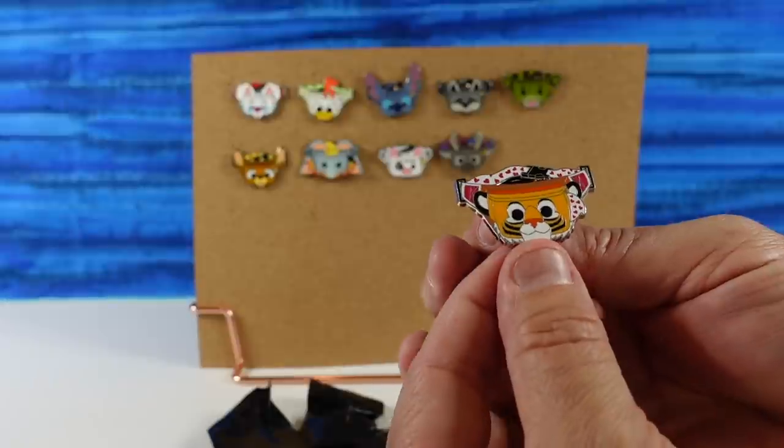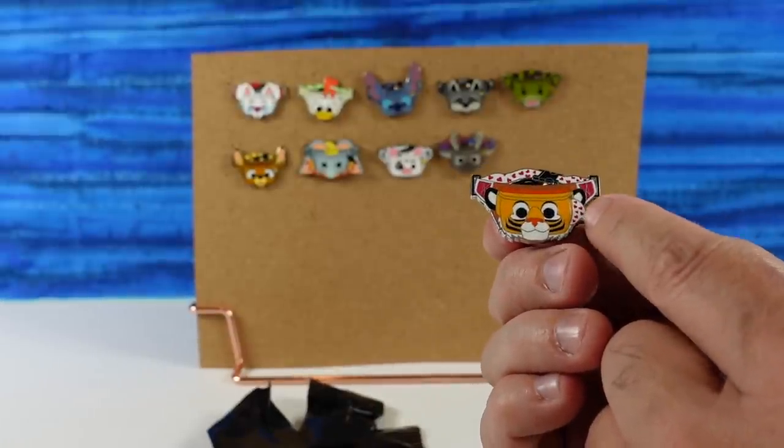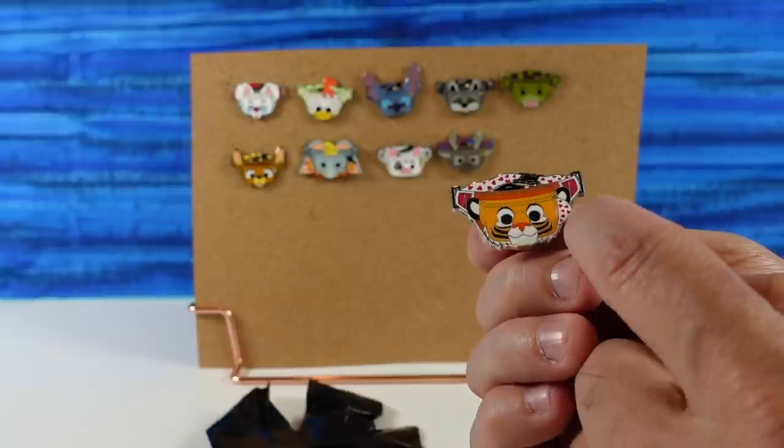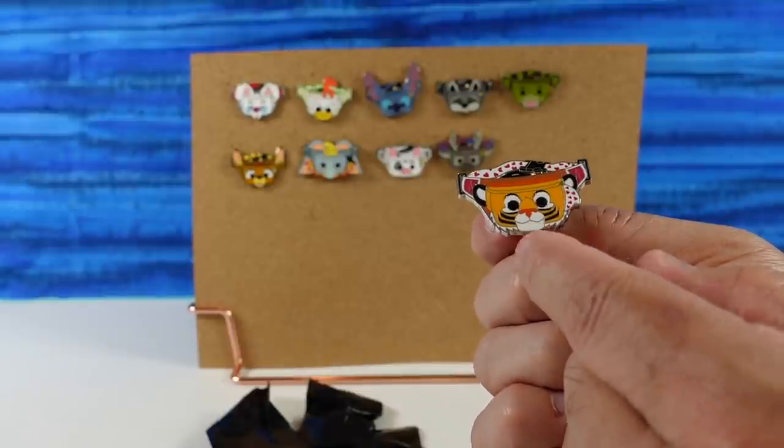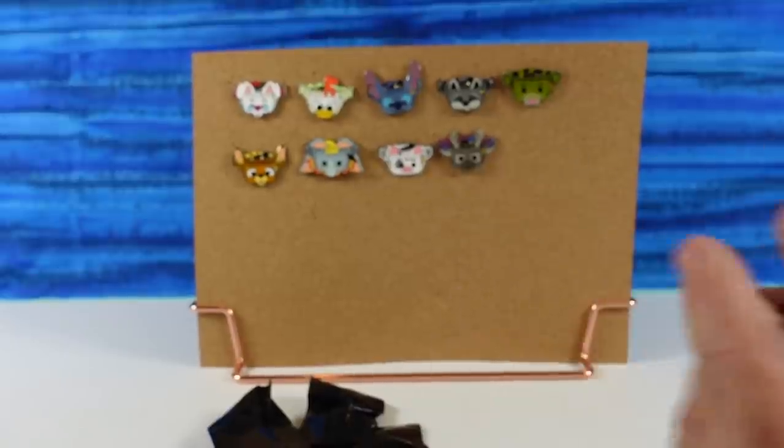Ooh, I have Rajah. Yeah, there's Rajah. That's cool because he has part of the shorts of the suitor that came to see Jasmine. That's cute. I like the way they did that. That was actually very creative. Good job, Rajah.